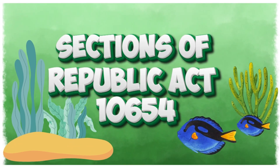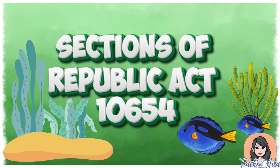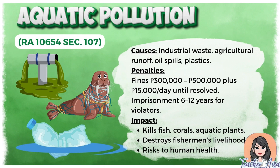Here are the sections of Republic Act 10654. Aquatic pollution under RA 10654 Section 107 comes from industrial waste, farm runoff, oil spills, and plastics. It harms marine life, destroys fishermen's livelihoods, and endangers human health. Violators face fines of 300,000 to 500,000 pesos plus 15,000 pesos per day until resolved, and imprisonment of 6 to 12 years.